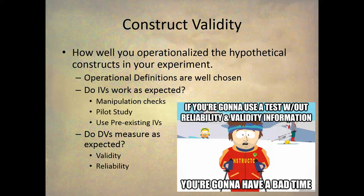With DVs, we often use pencil-and-paper tests or other types of tests, such as interview tests. Once we get into pencil-and-paper and other types of tests, we move into the area of psychometrics. Psychometrics is the statistics of measuring things. In the statistics of measuring things, we're interested in two key concepts: whether or not a variable has good validity and good reliability. If you're going to use a test without reliability or validity information, you're going to have a bad time.